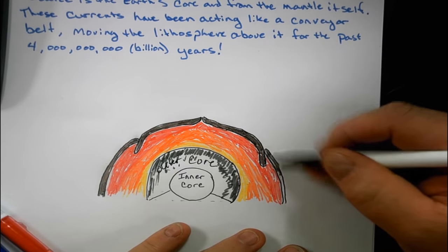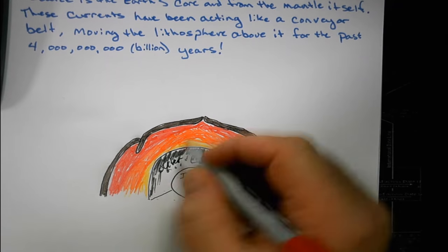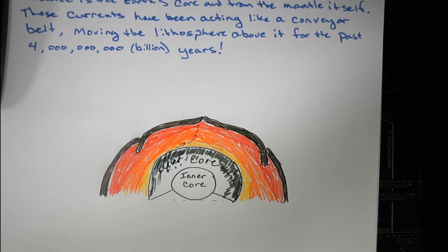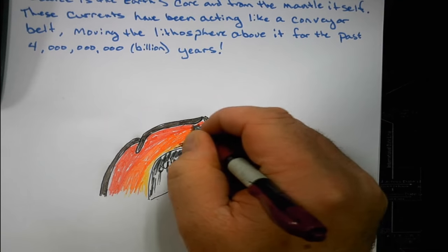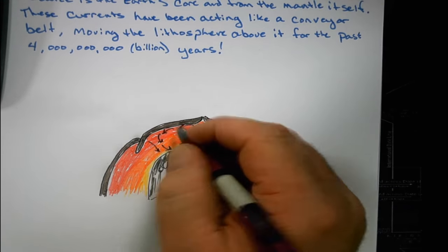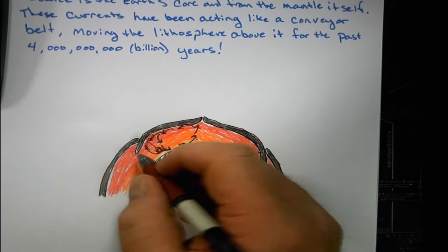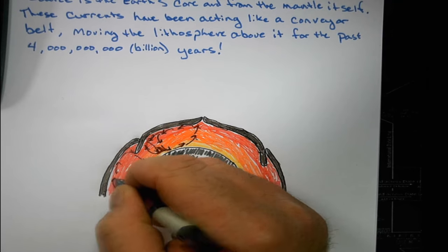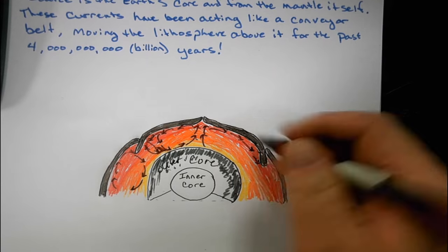You may notice that the convection currents create circles underneath. When two circles rise together and get to the surface, when they get to the crust, they start to separate.